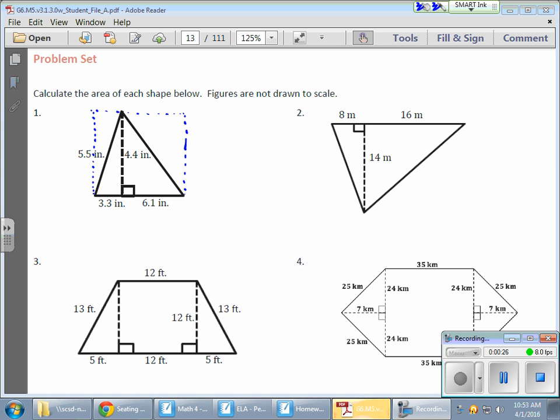What's kind of neat is it's the same formula for the area of all triangles. Here's my one-half base times my height, and where does that come from? Well, that comes from saying that triangle is half the size of the rectangle that it creates.